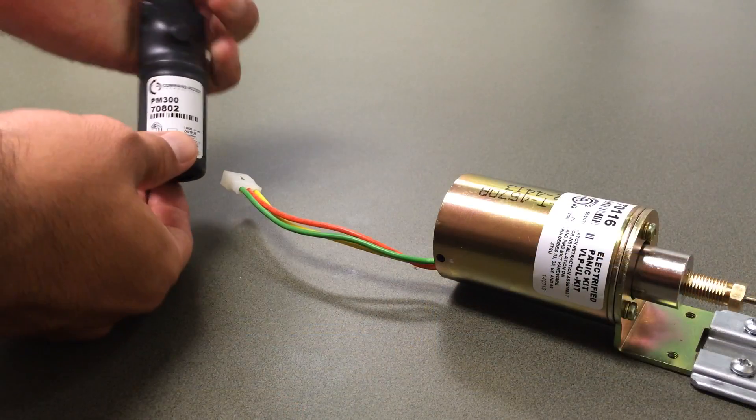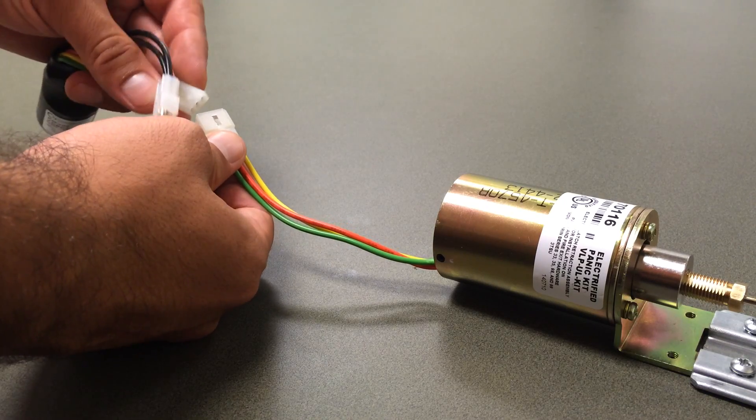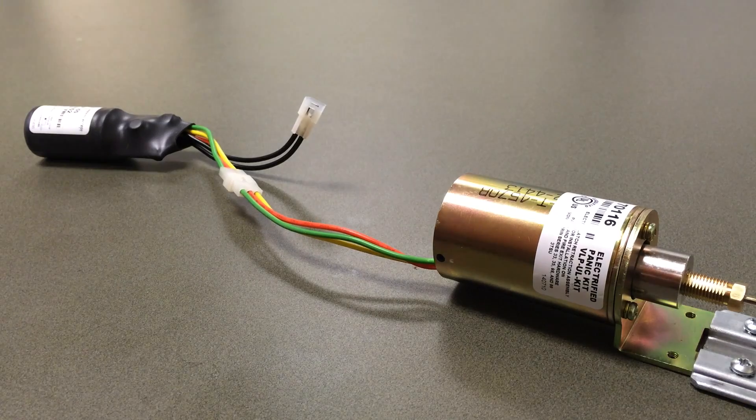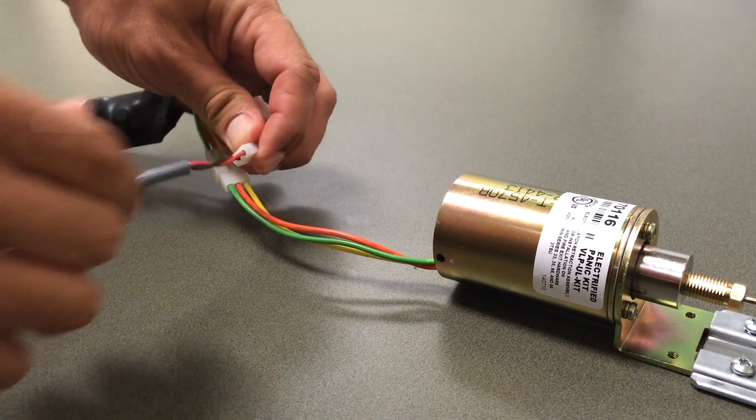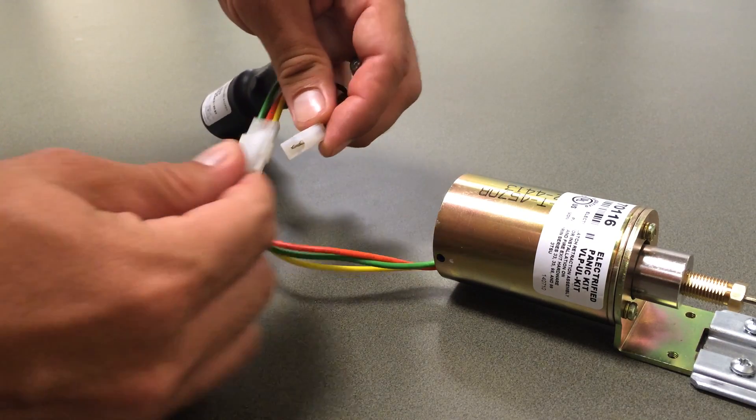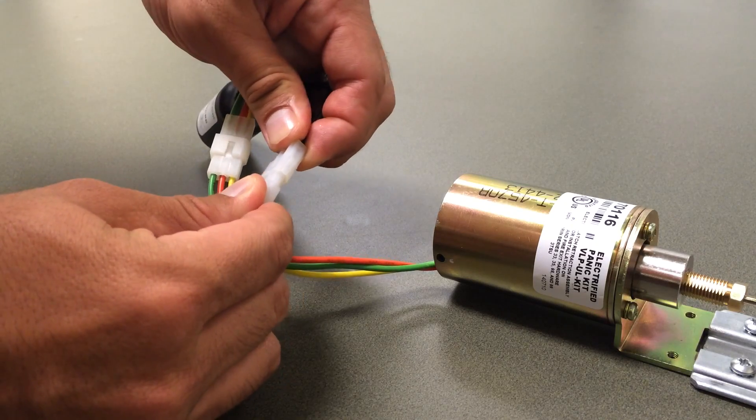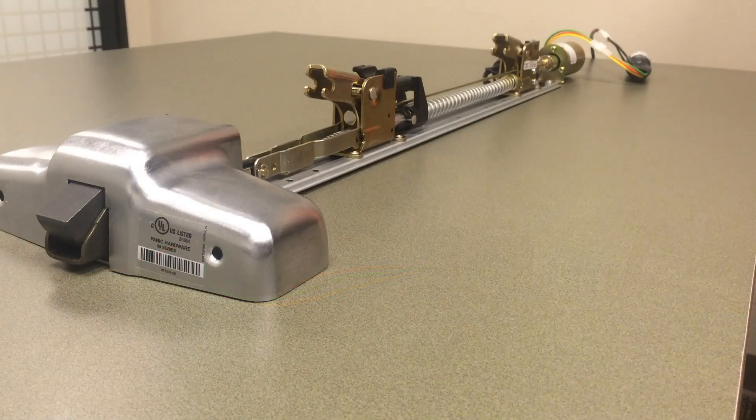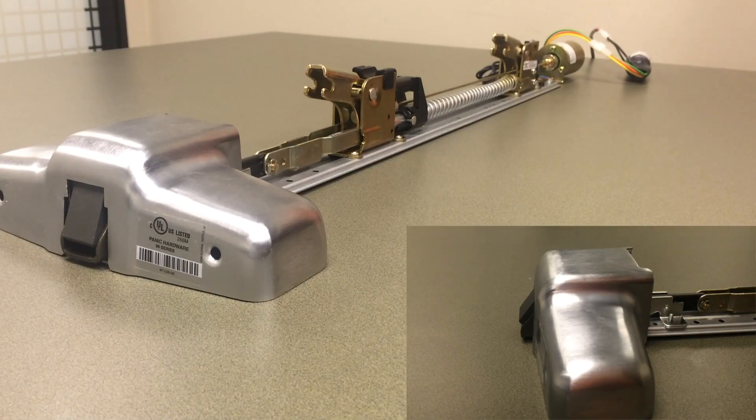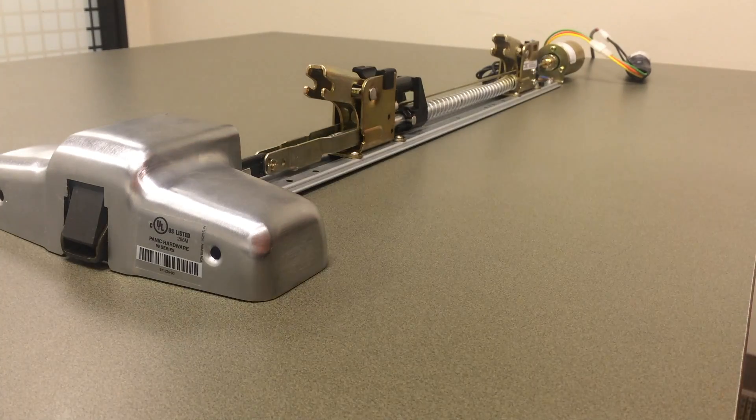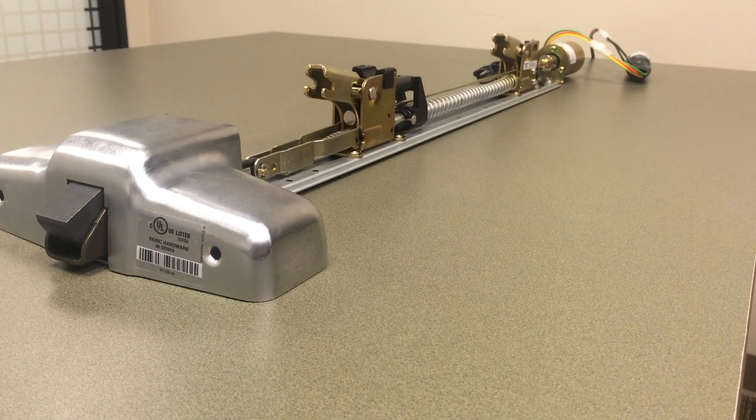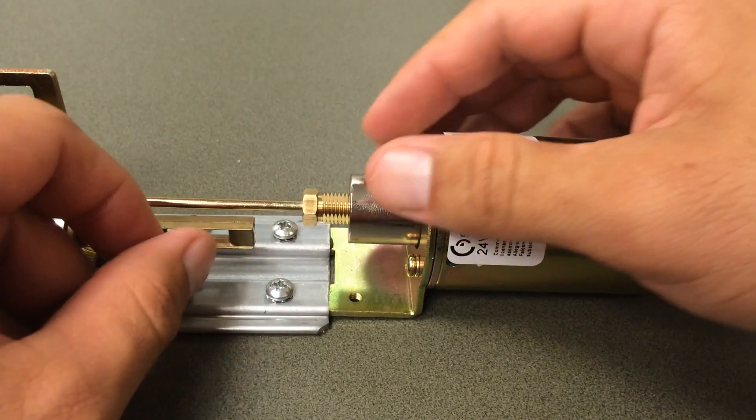What we recommend next is to install the PM300. If you do have a power source we recommend testing it at this point so we can get the proper adjustment on the latch. Plug it into our power source and go ahead and fire it. We can see here that it is not retracting all the way when we fire the device. So we go ahead and adjust this.